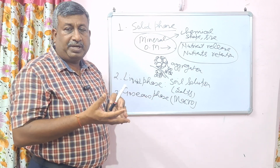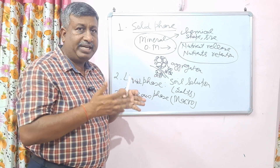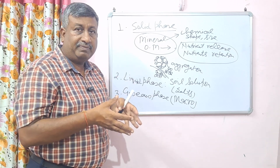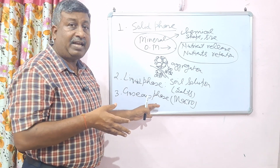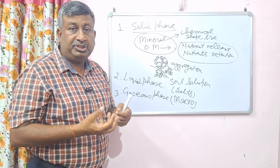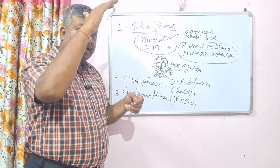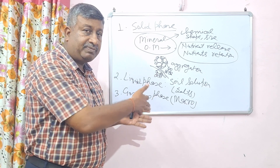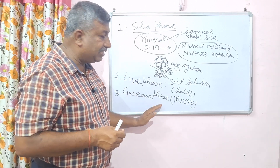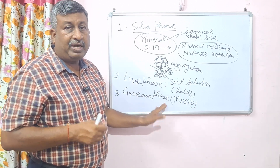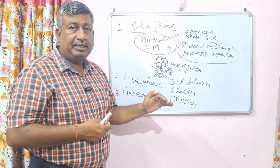These gases are produced by root respiration and microbial respiration, and through gaseous exchange with the atmosphere. The air in the gaseous phase is very important for root respiration — oxygen is necessary, and CO2 is also produced through root respiration. This gaseous phase is important from a respiration point of view. Whenever the liquid phase is high and liquid is more, air is removed, creating anaerobic conditions, and respiration is reduced.